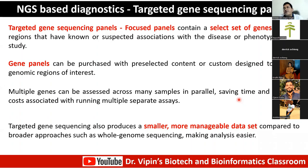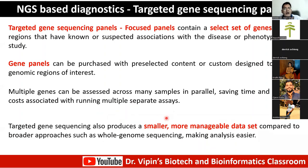Targeted gene sequencing panels contain a select set of genes or gene regions with known or suspected association with a disease or phenotype. Gene panels can be purchased with pre-selected content or custom designed. Multiple genes can be assessed across many samples in parallel, saving time and reducing cost. You get smaller, more manageable, and more directed data — rather than whole-genome data where you get a lot but are unsure what to do with it. This is more like a candidate-gene approach.